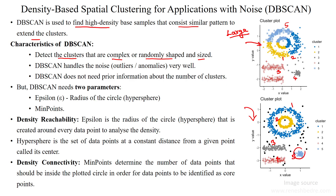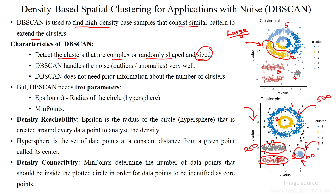A single cluster may have, for example, 100 data points; another may have 250 samples; another may have 500 samples. The number of samples will be different, the size will be different, and the shape of each cluster is different. Different shaped clusters can also be handled by DBSCAN clustering.